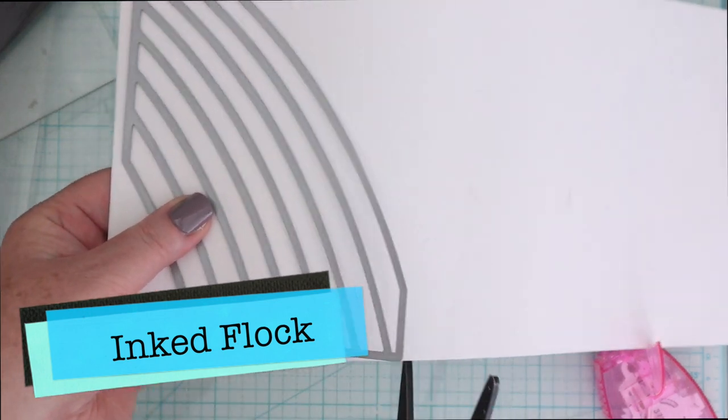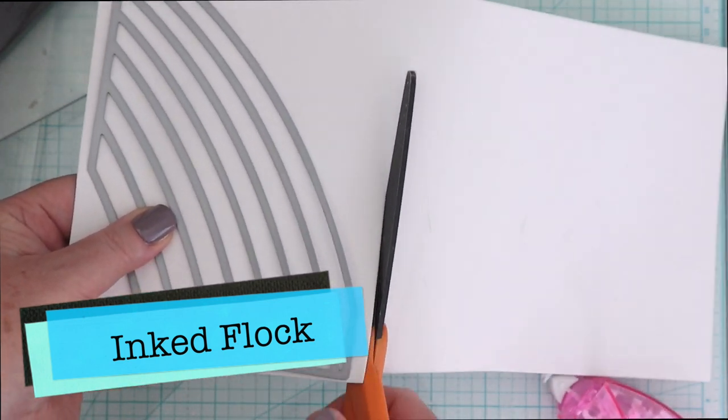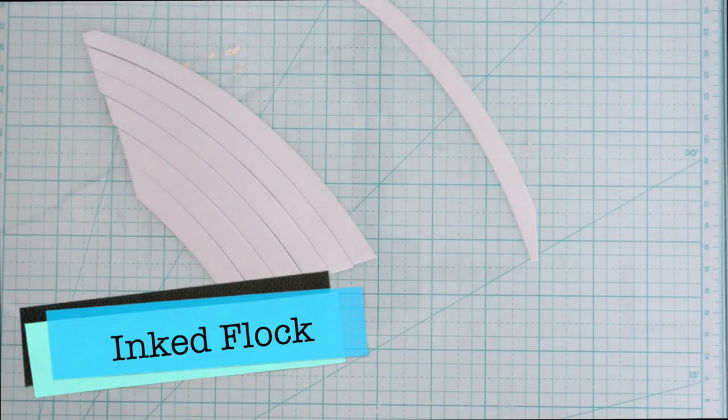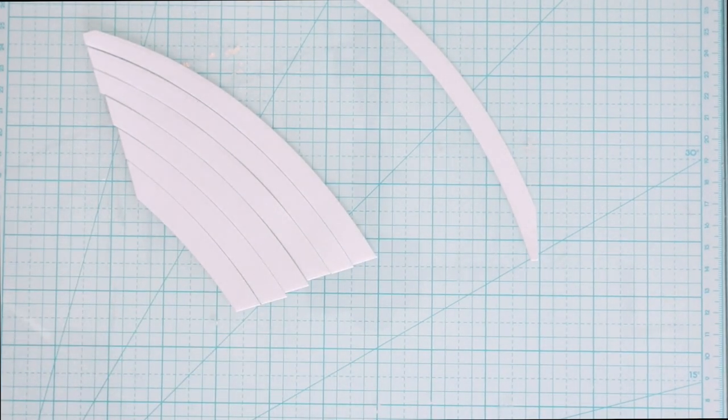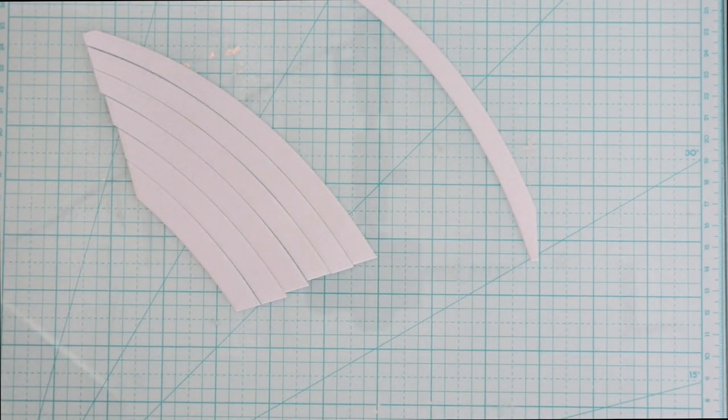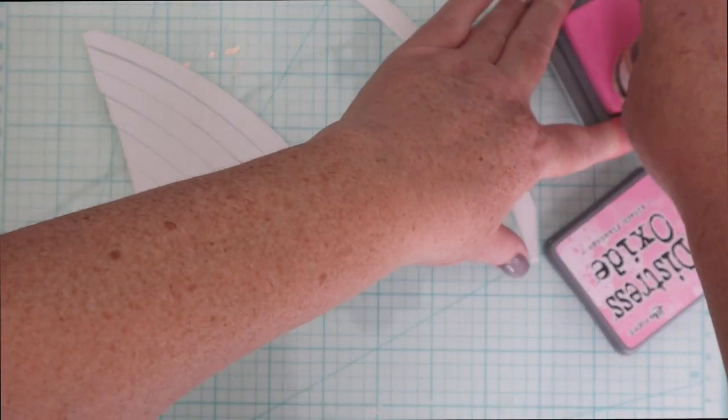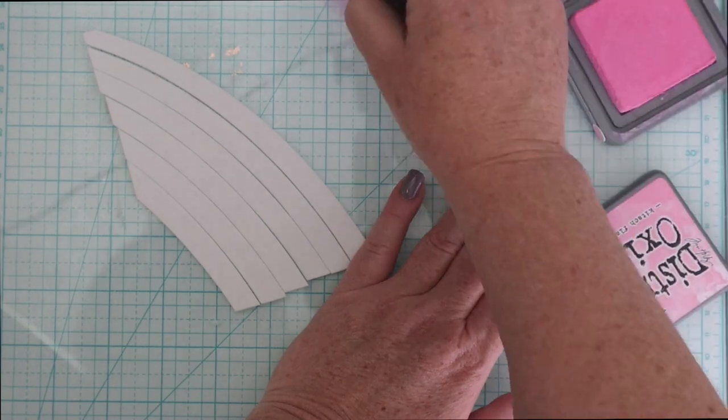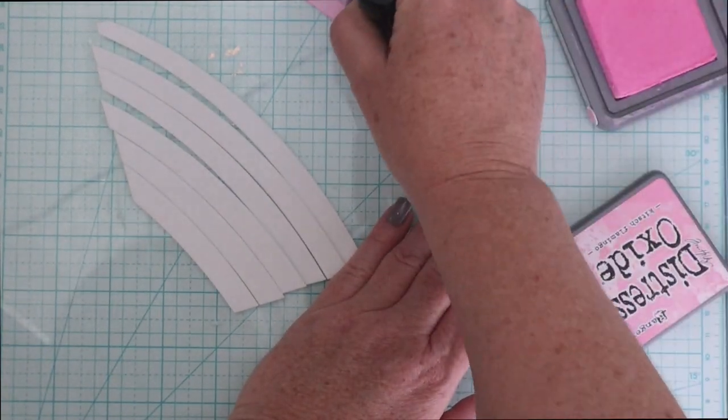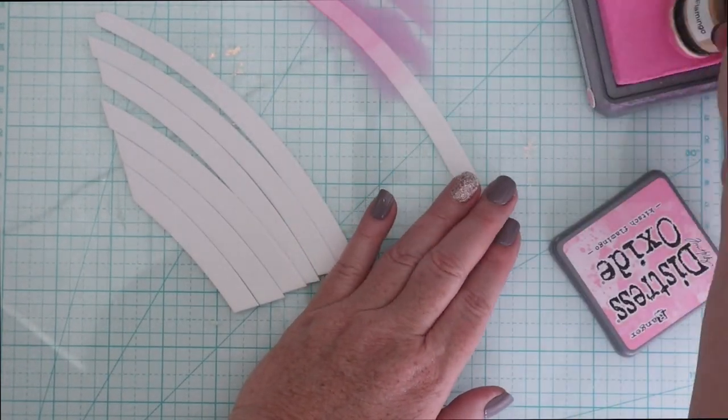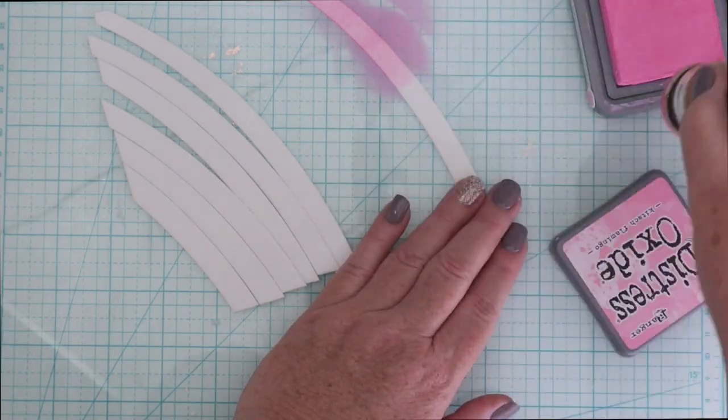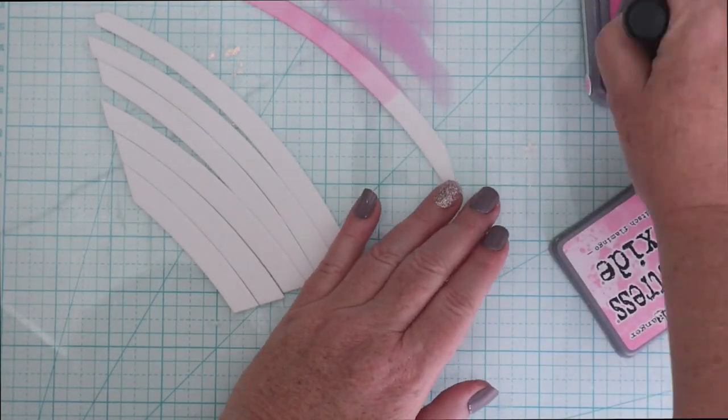If you're careful you can even ink on these Flock transfer sheets. For this technique I'm using a My Favorite Things die and I'm going to be cutting out the white flock that Thermaweb has. It's called White Latte. So I cut out the rainbow rays from the My Favorite Things die out of the white flock and I'm going to be using Distress Oxide ink on top.